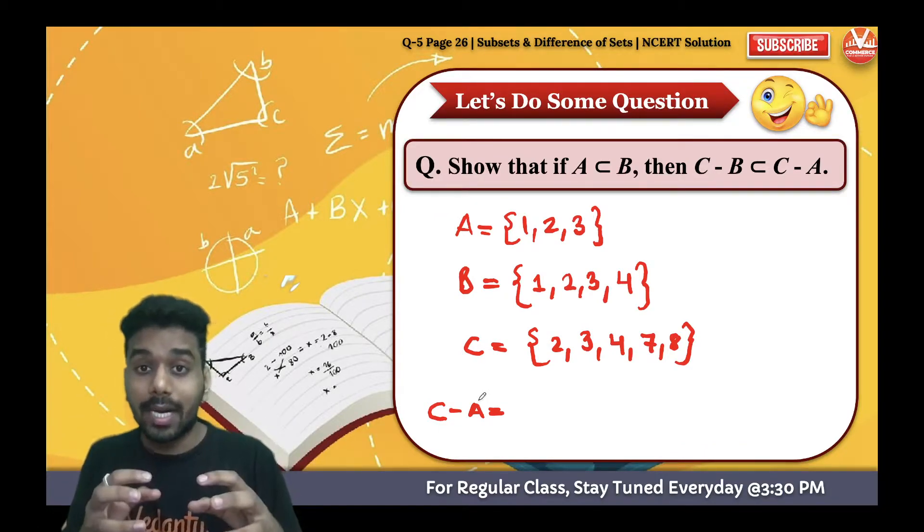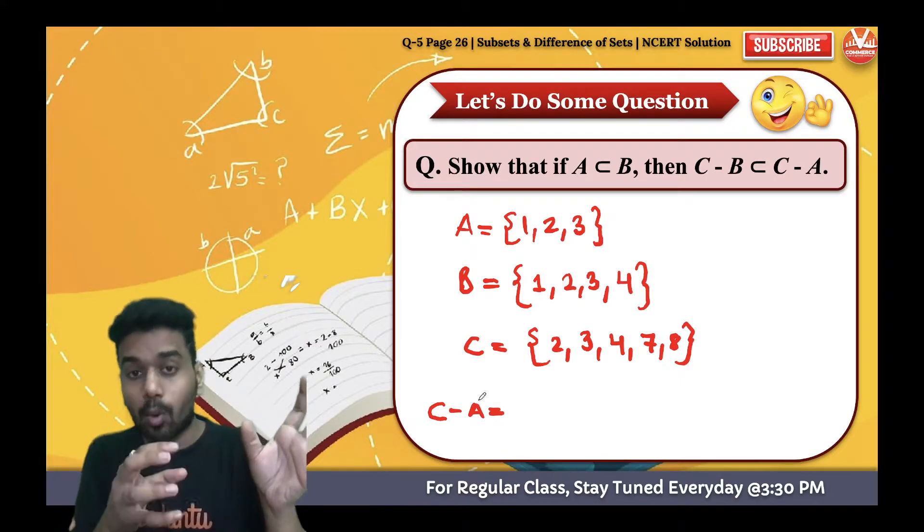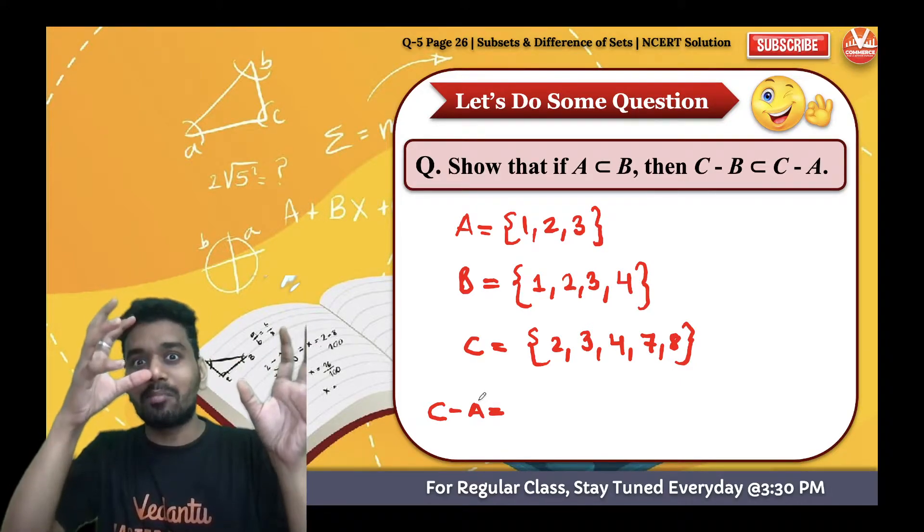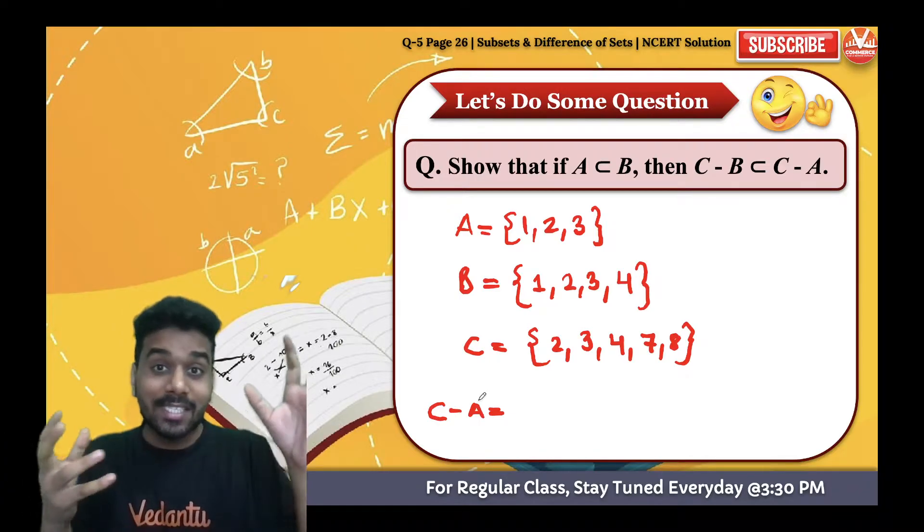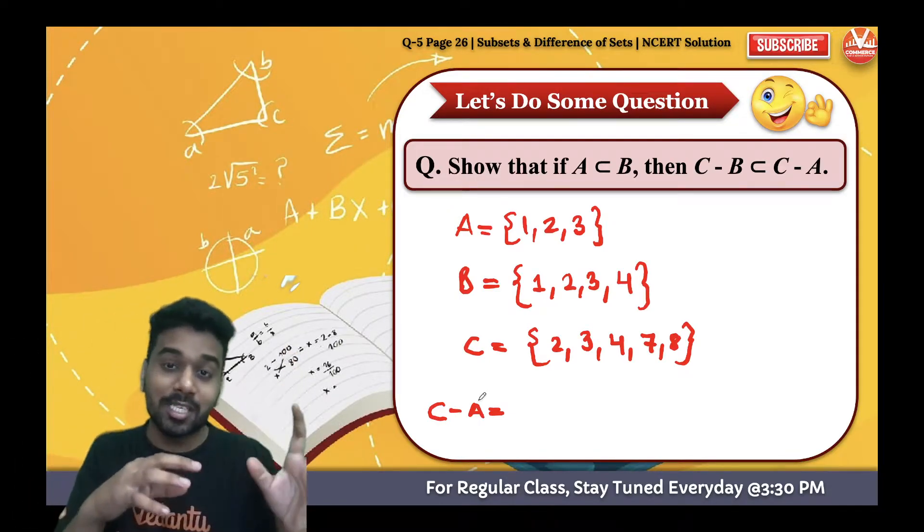So C minus smaller number, C minus bigger number. You know C minus bigger number will give the smaller set in comparison to C minus a smaller set.